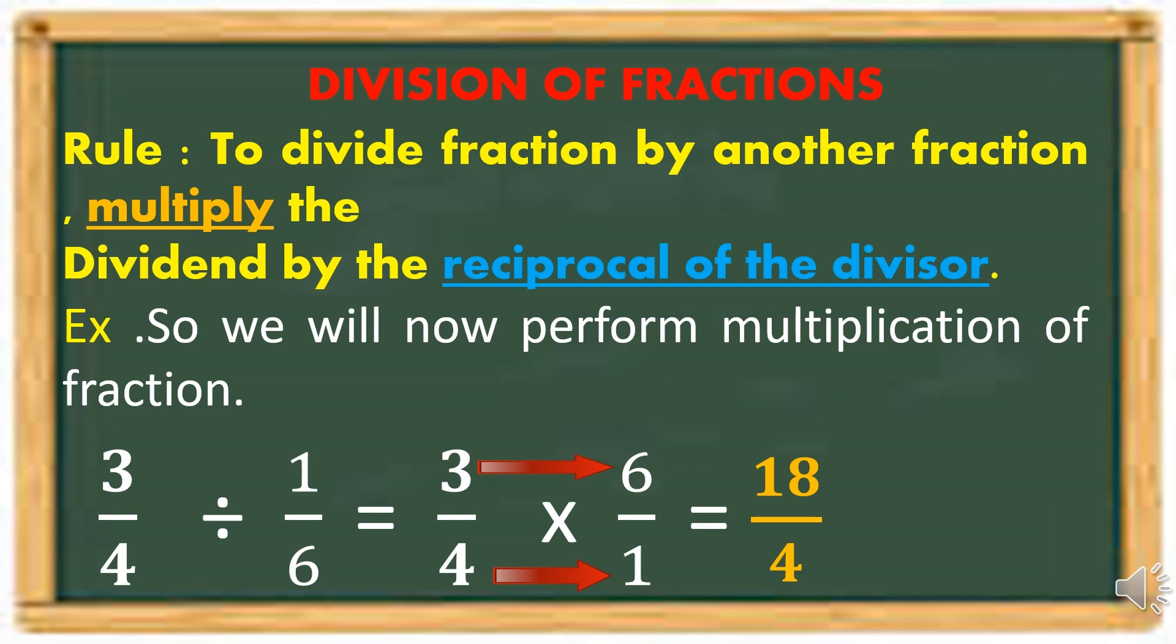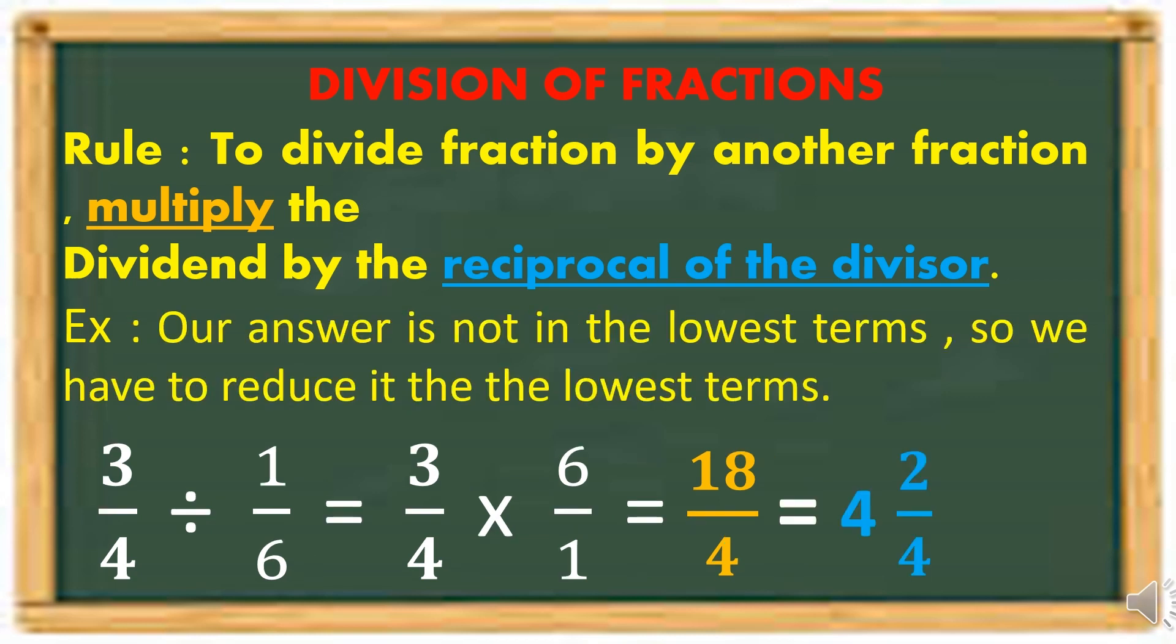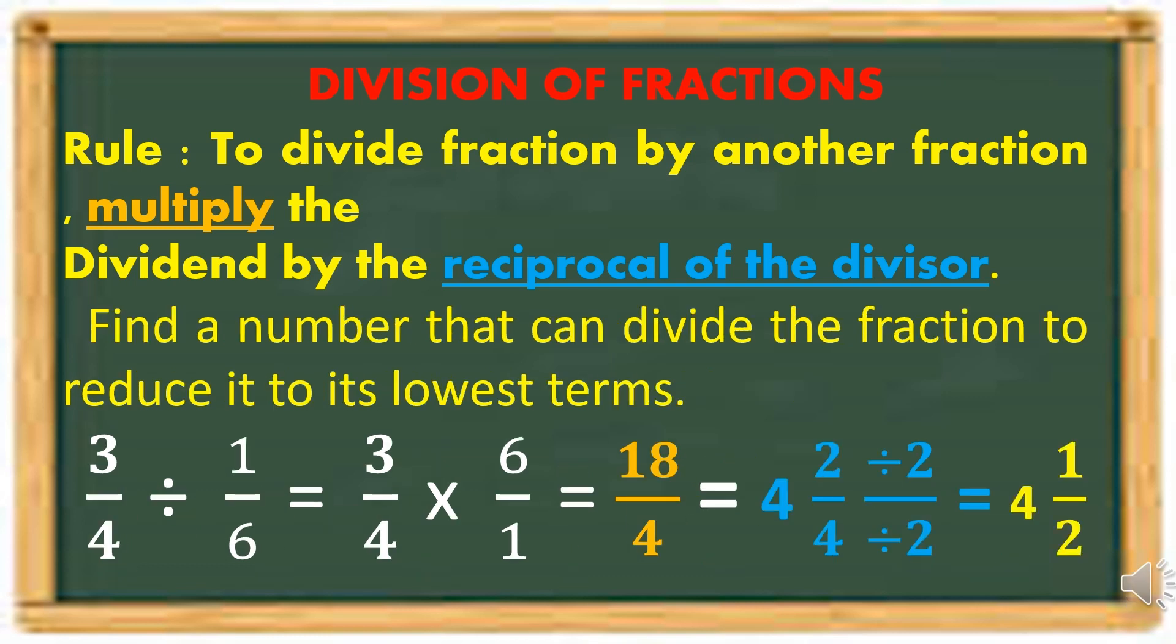So our fraction is 18 over 4, an improper fraction. We will divide 18 by 4, result is 4 and 2. 2 fourths is not in the lowest terms, so we will reduce this to its lowest terms. Common factor 2, the fraction in the lowest terms is 4 and 1 half.